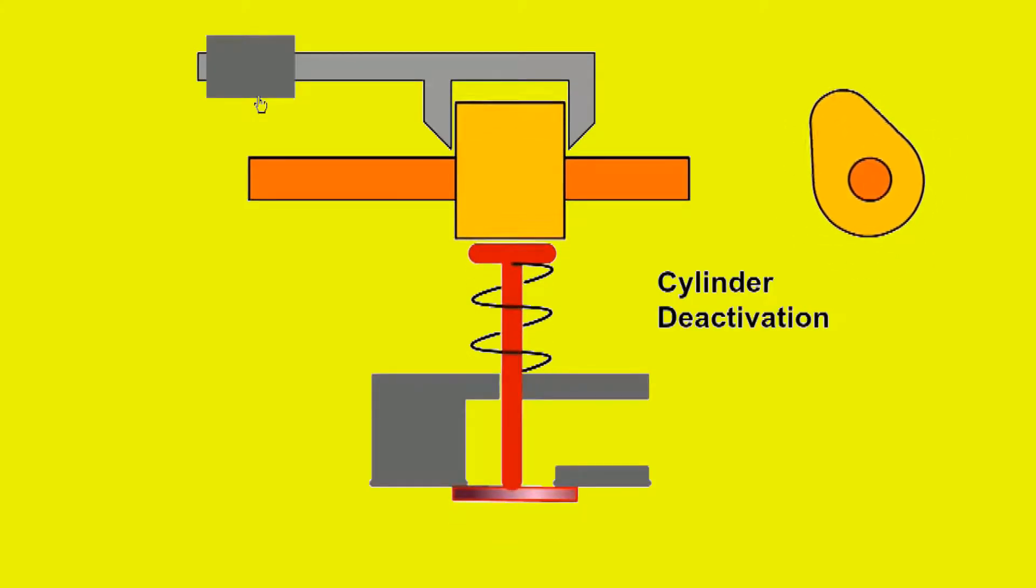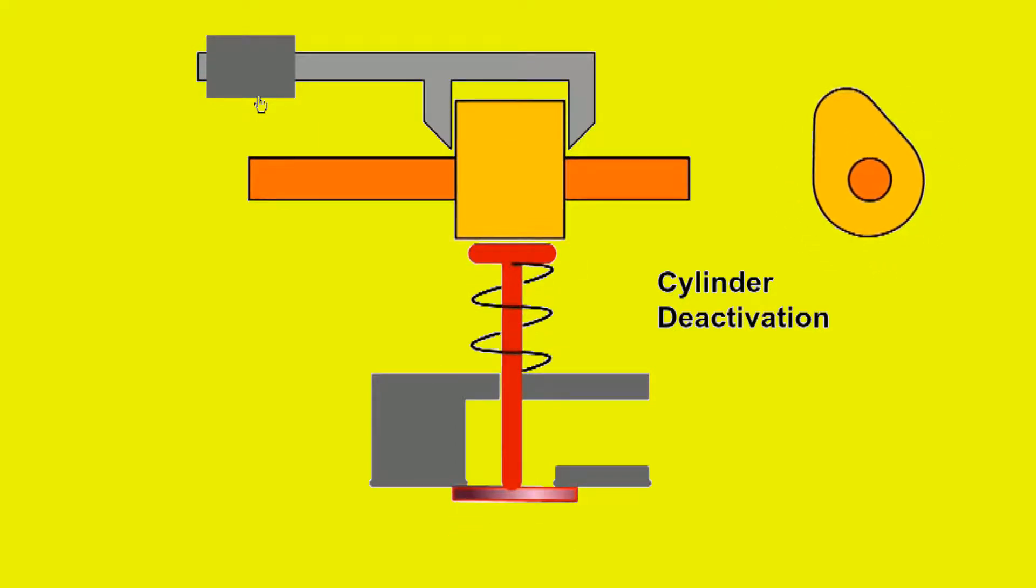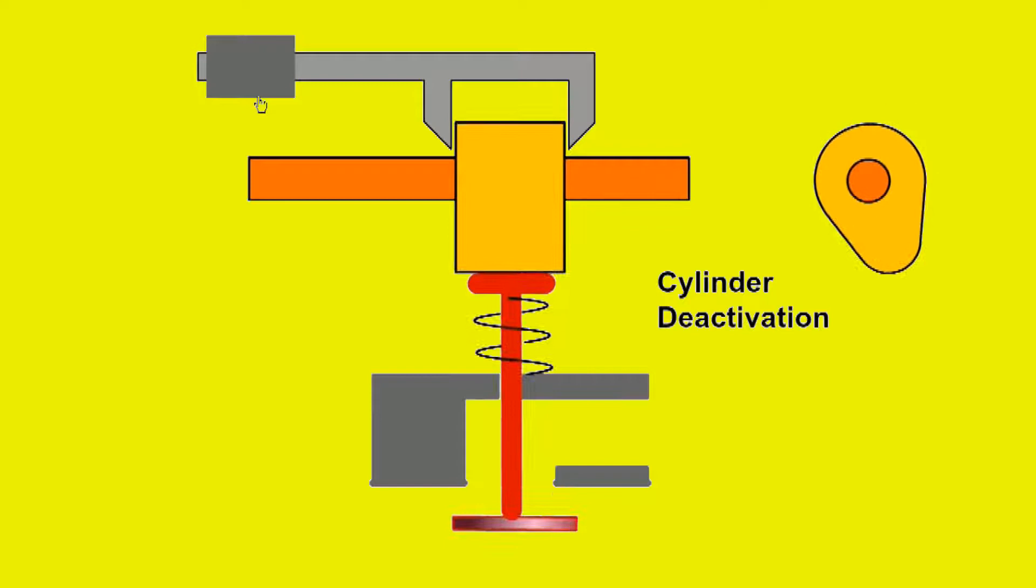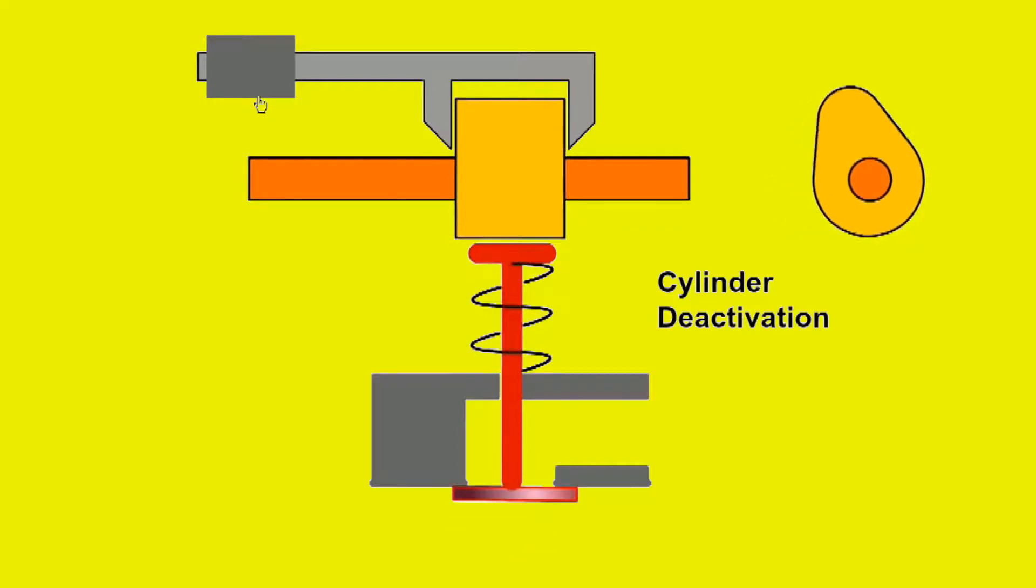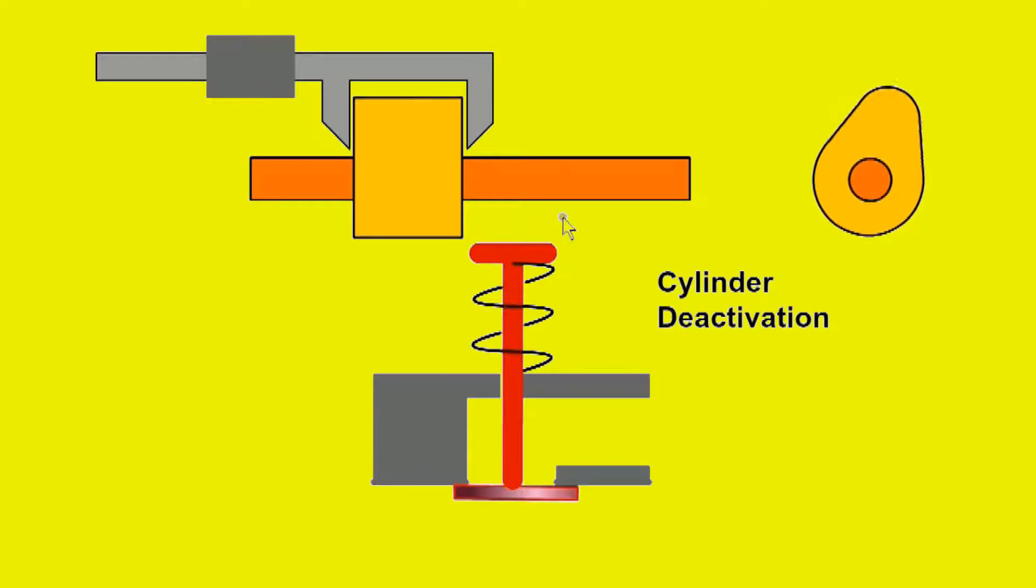Cylinder deactivation. On some cars it is possible to shut down some of the cylinders when not required, usually when cruising at light load. This is achieved by a movable cam which is splined onto the shaft. When the cylinder is not required, the cam for both inlet and exhaust valve is moved away from the cam follower, leaving the valves in a closed position.